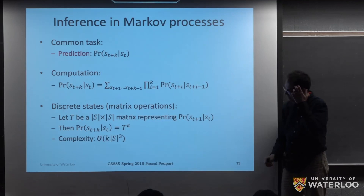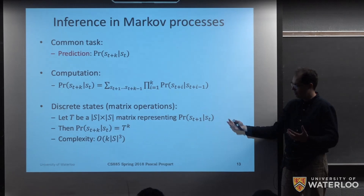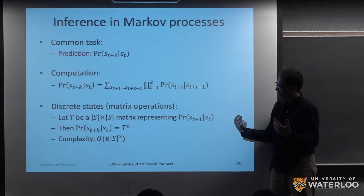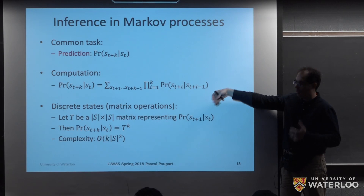The complexity of doing this is going to be k times s cubed, because whenever we multiply some matrices together — if I've got a matrix that is of size s by s — then multiplying two matrices together takes cubic time with respect to the dimensionality of that matrix. So that would be the complexity, and in general this will be some core operations that we'll want to do to be able to predict future states.